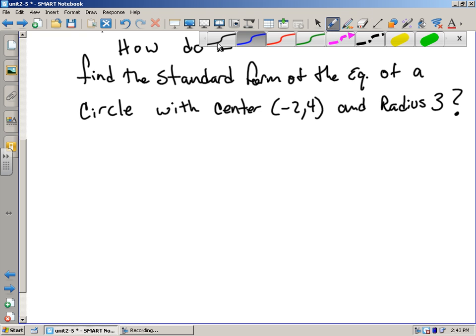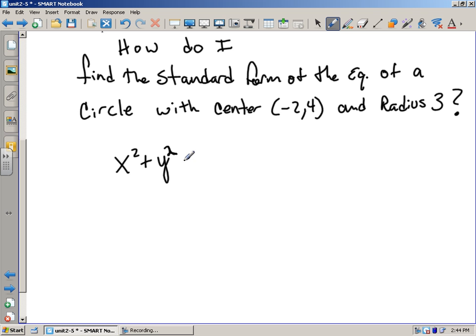We said in the last video that the equation of a circle with its center at the origin was simply x squared plus y squared equals r squared. The only difference is with this problem, we've got to take into account the fact that the center is no longer at the origin.